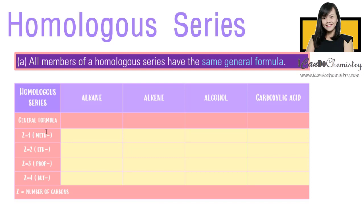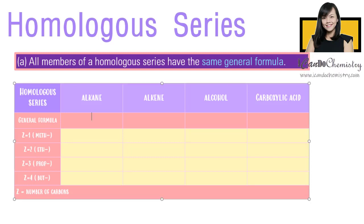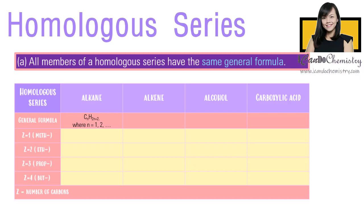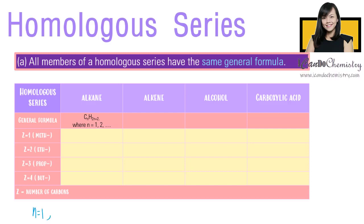Now let's focus on part A: all members of a homologous series have the same general formula. The general formula of alkane is CnH2n+2, where N starts with 1. The first member of alkane is methane, where N is 1, hence the formula is CH4.